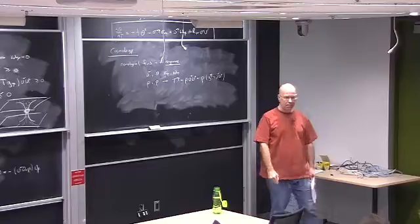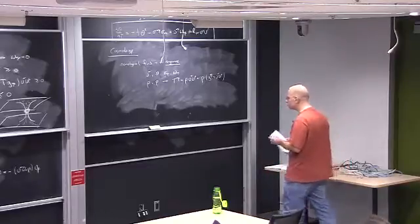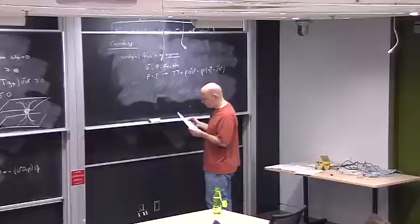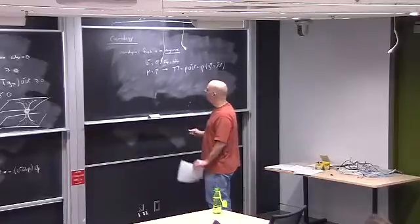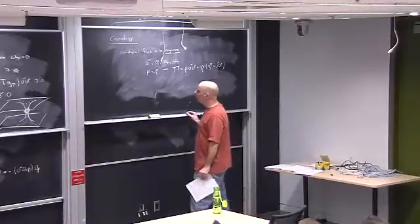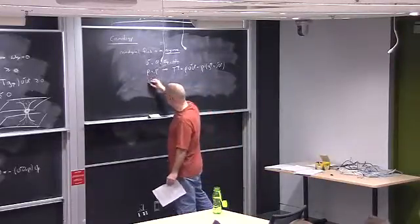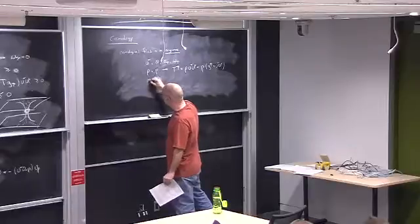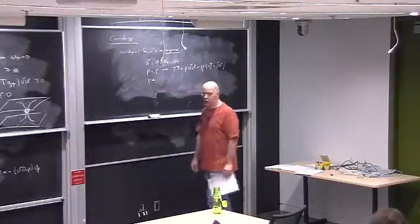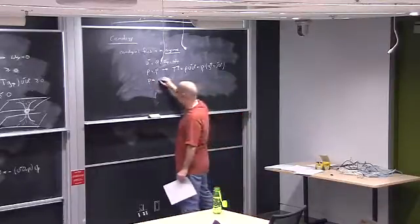One thing we have to do in cosmology is postulate an equation of state — a relationship between the pressure and the density.